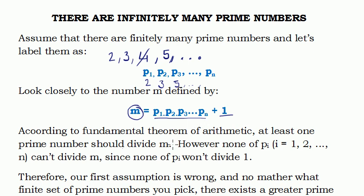So, no matter what finite set of prime numbers you pick, by defining this number M, multiplying all of the primes you picked and adding 1 to them, you will obtain a number which can be divided by a prime number other than the elements of the set P1 up to Pn.